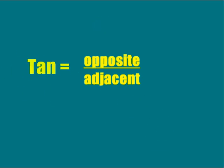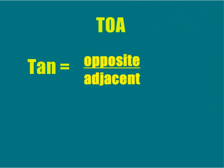You determine the tangent of an angle by dividing the side opposite the angle by the side adjacent to the angle, thus giving you the TOA.